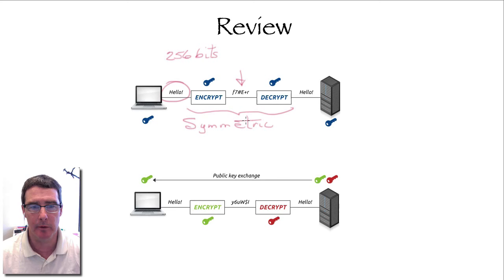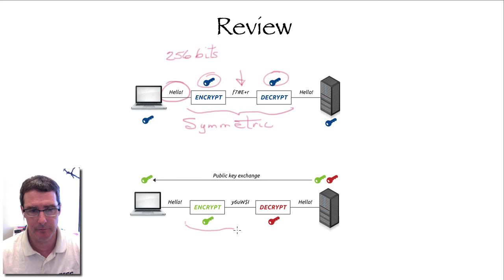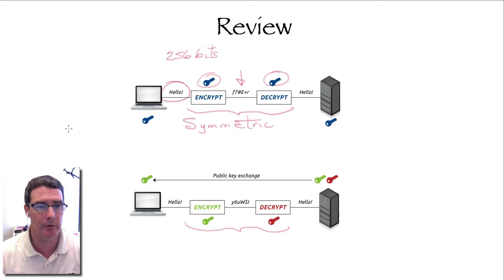One of the problems with the symmetric system is key distribution — how do we get the keys to both ends? That's solved by a different encryption system. Both systems are based on prime numbers and math, but there's a different process used in the public key system. This is called the Public Key Infrastructure system, or PKI.